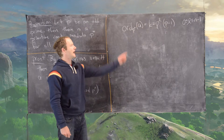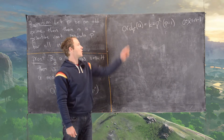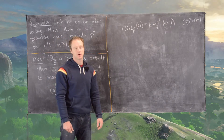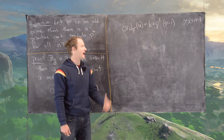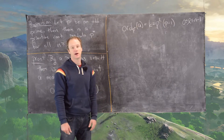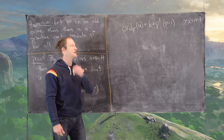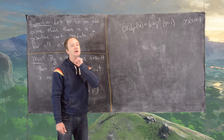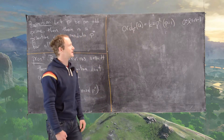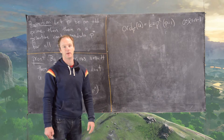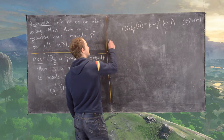Where we left off: the order of a modulo p^n, which we called k, is of the form p^l times (p-1), where l is a natural number between 0 and n-1. Now there are two cases to consider.